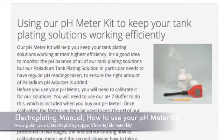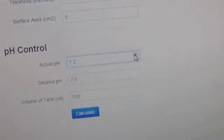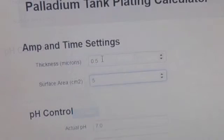We pH tested the palladium tank plating solution that was used for this demonstration, and it had a pH of 7.2, which is well within the optimal operating pH range for palladium tank plating solution, so no palladium pH adjuster was added. The required thickness of plate that was entered was 0.5 microns, as anything over this may require manual polishing.